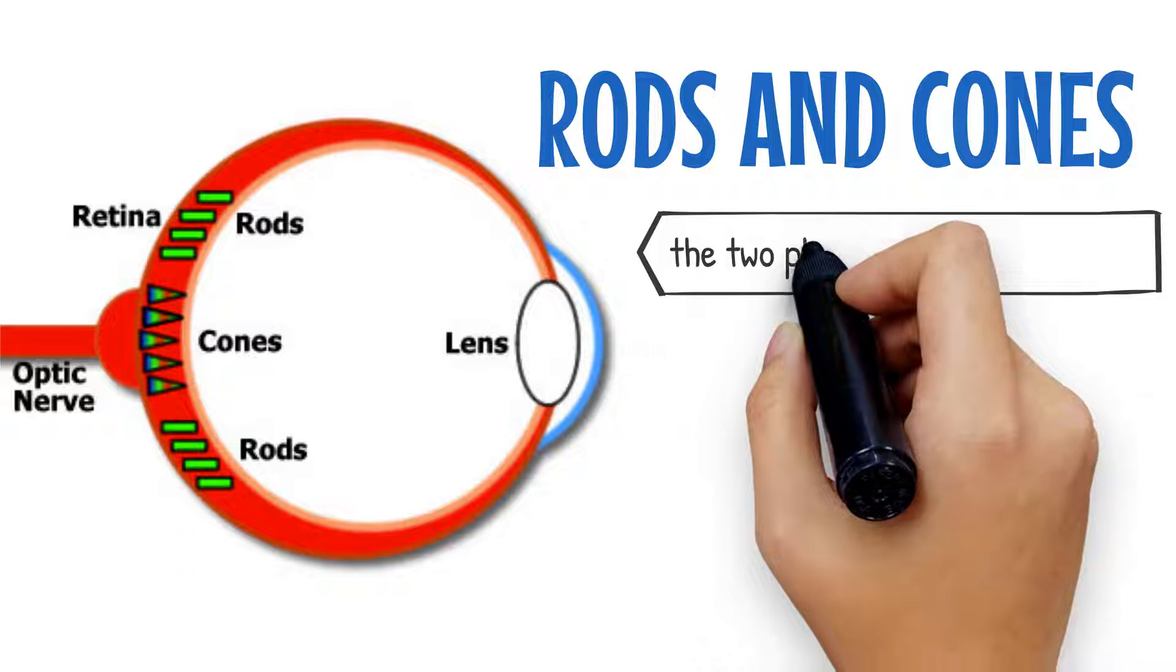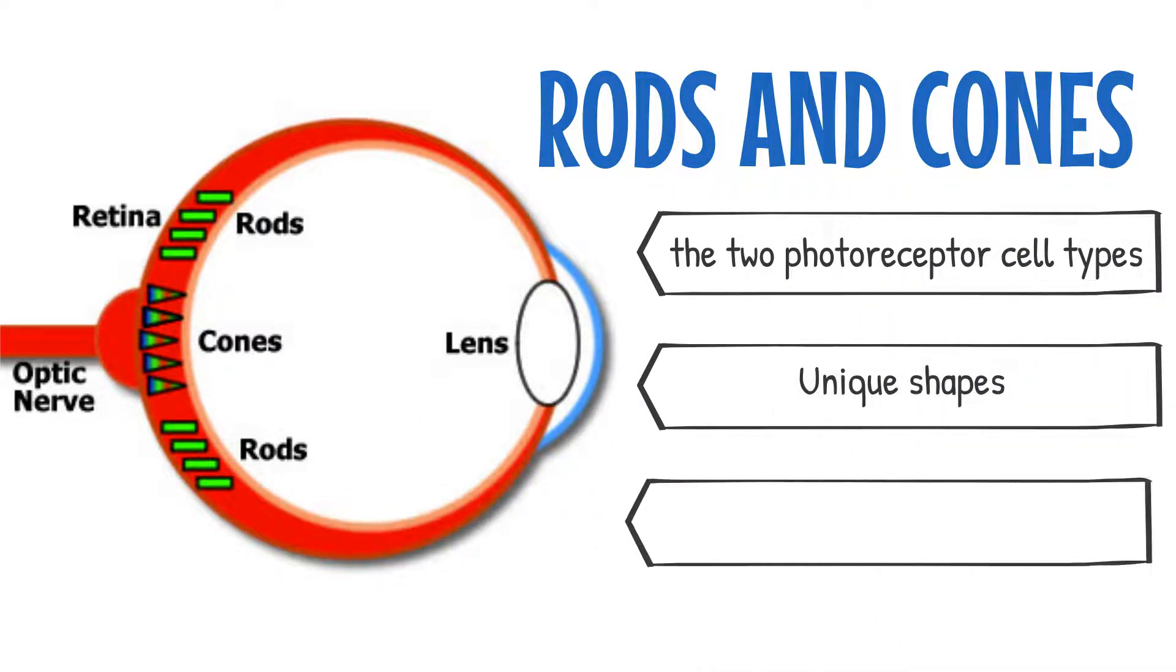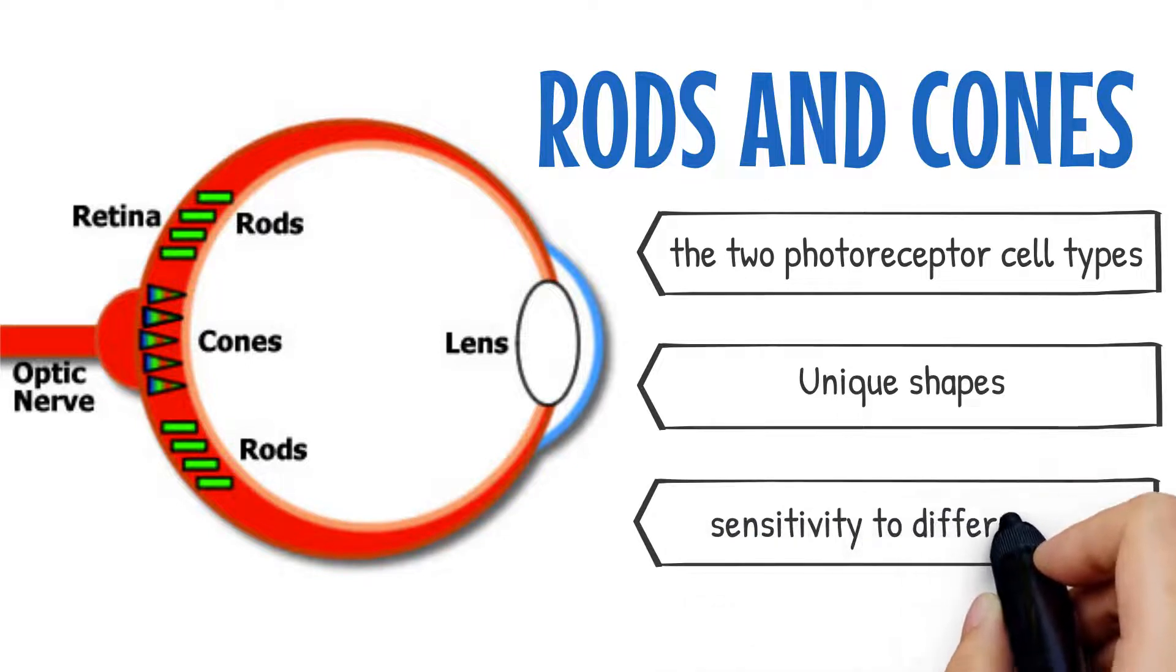Rods and cones, which are the two photoreceptor cell types, are differentiated structurally by their unique shapes and functionally by their sensitivity to different kinds of light.